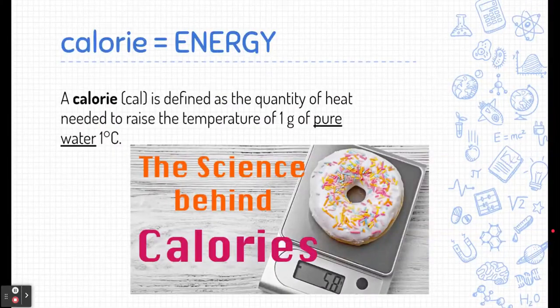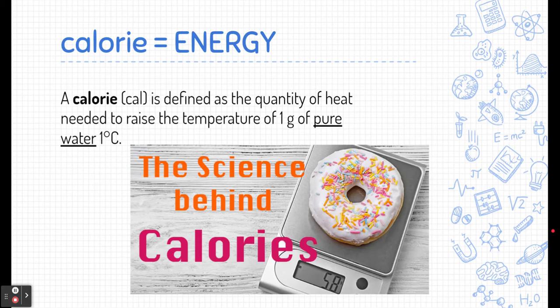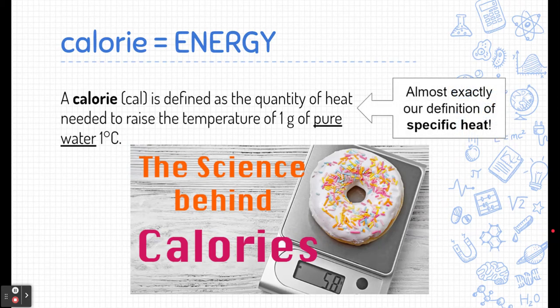We need to understand what a calorie is. A calorie is just a unit of energy. It's defined as the quantity of heat needed to raise the temperature of one gram of pure water. This is almost exactly our definition of specific heat, but it's very particular to water, and we're going to learn why in a minute.